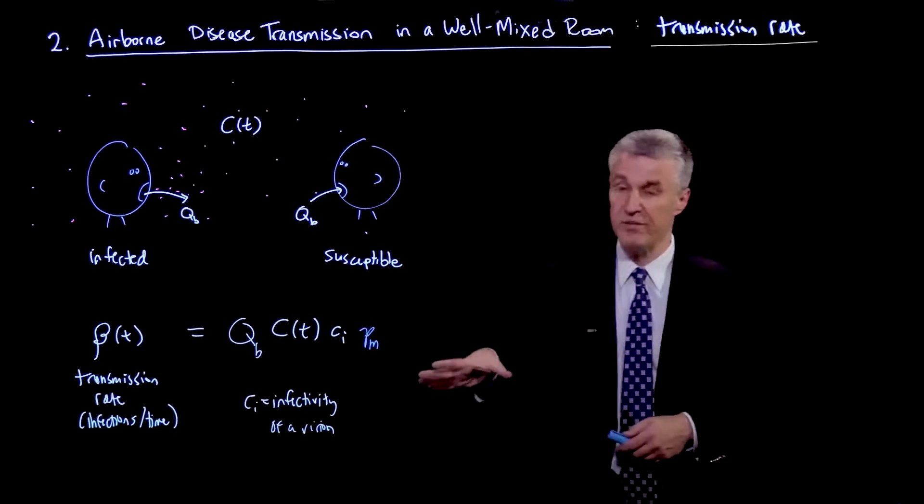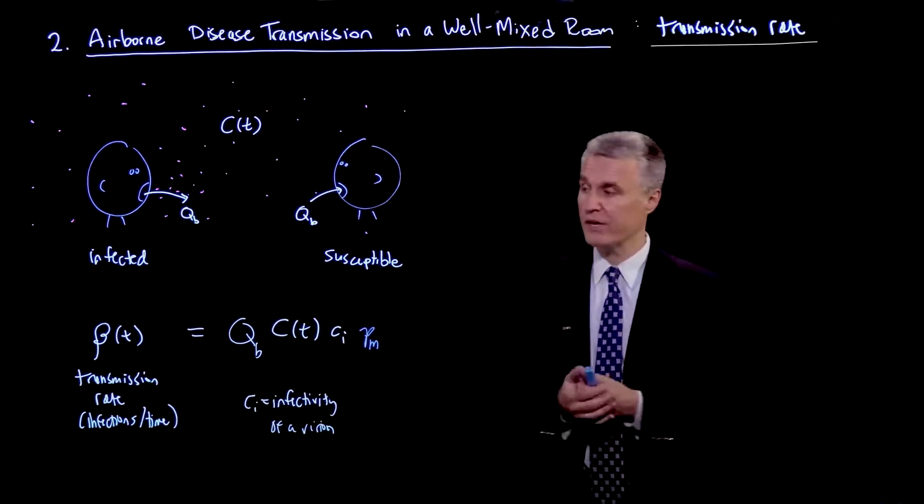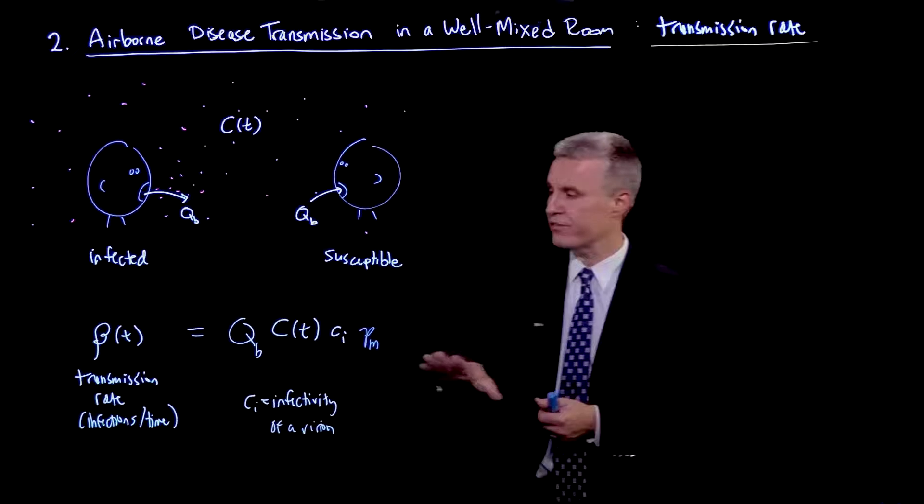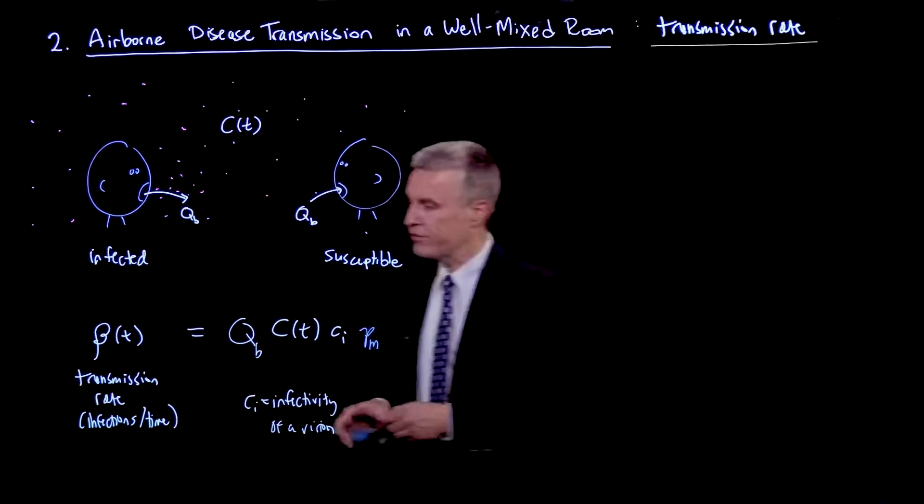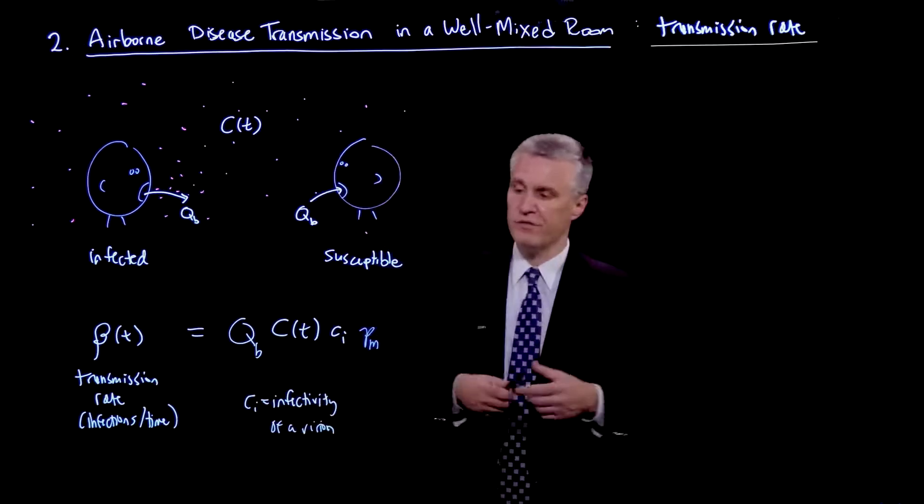These quantities, many of them will depend on size, and we'll come to that, size of the droplet. But just as a rough approximation, this is the starting point. So this is the number of basically new infections per time.